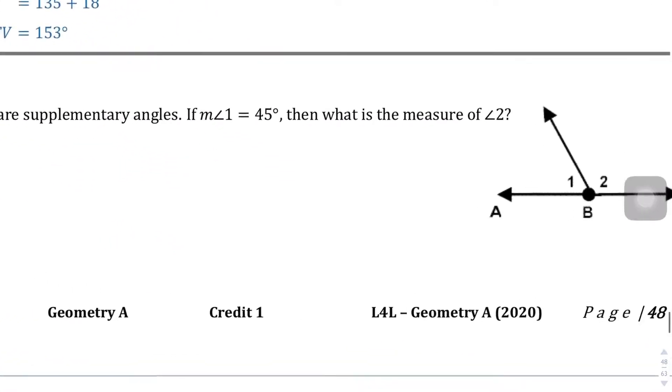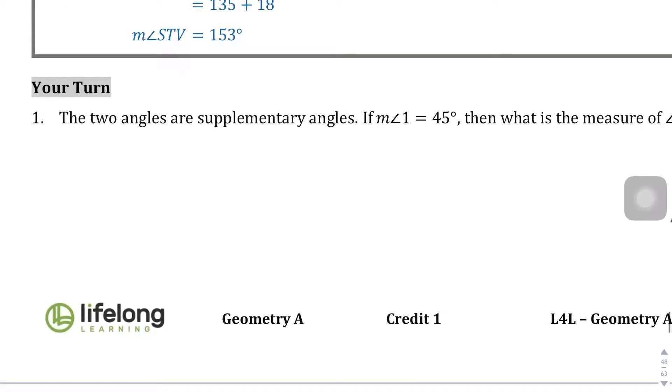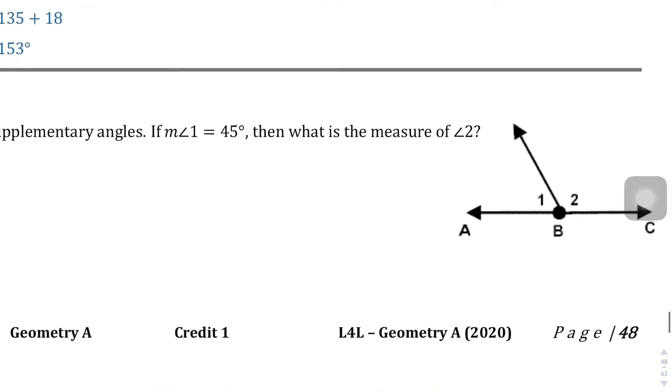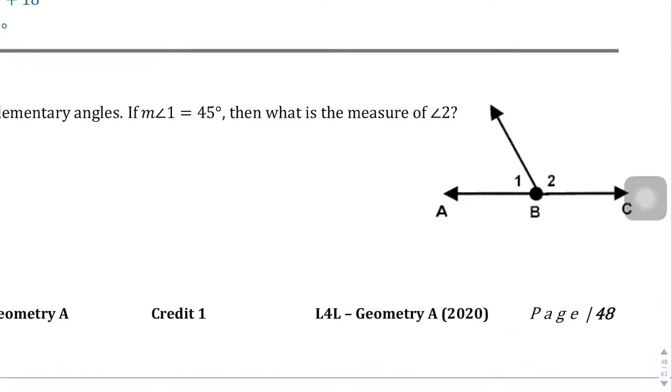Let's take a look at the Your Turn problem here at the bottom of page 48, and we are told that two angles are supplementary angles. If angle 1 is 45, what is the measure of angle 2? So if we know that this is 45 degrees, since we know that it's supplementary, it's going to equal 180 degrees. Whatever angle 1 is, angle 1 plus angle 2 is going to equal 180 degrees.